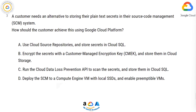A. Use Cloud Source Repositories and store secrets in Cloud SQL. B. Encrypt the secrets with a customer-managed encryption key (CMEK) and store them in Cloud Storage. C. Run the Cloud Data Loss Prevention API to scan the secrets and store them in Cloud SQL. D. Deploy the SCM to a Compute Engine VM with local SSDs and enable preemptible VMs.